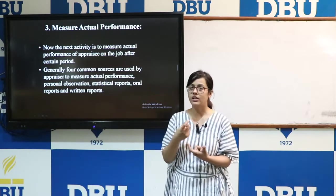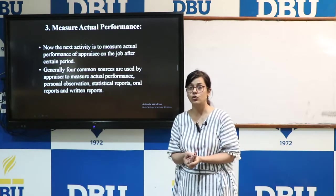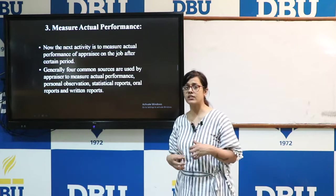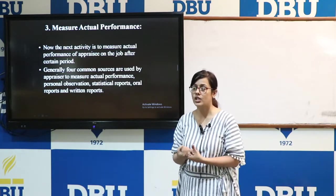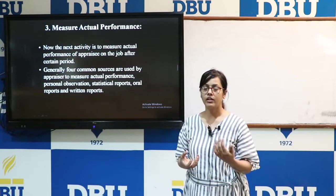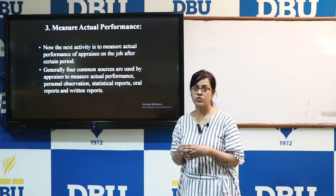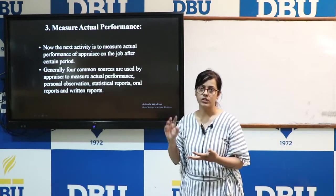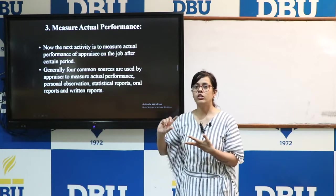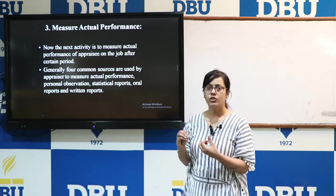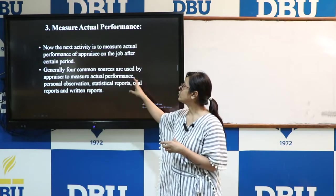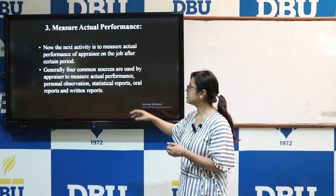The second source is statistical reports, which provide actual data related to employees' performance. The third is oral reports — discussions with supervisors or employees regarding working conditions, efficiency, and day-to-day problems. The fourth is written reports, prepared by supervisors, covering the working scenario of each employee, their working efficiency, production-related units, and other work measures. All records related to actual performance are collected through these sources.